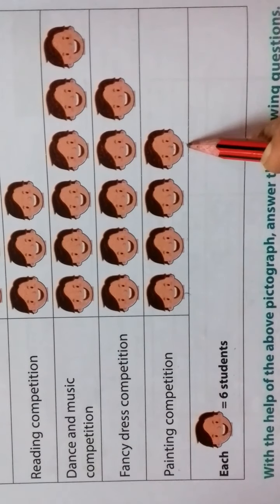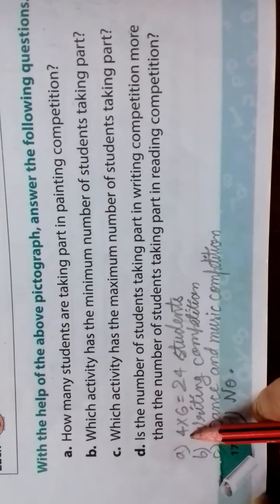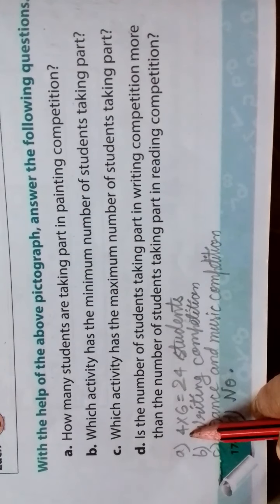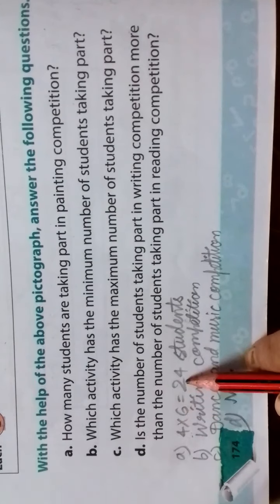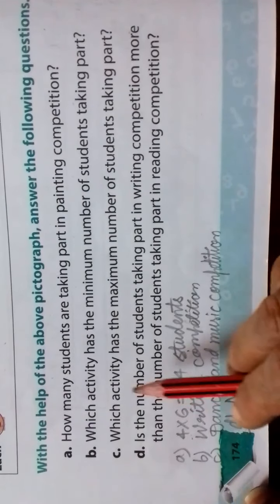Okay, one is this method. This is more time. The other method is: How many children participated? 4. And 1 student is equal to 6. So 4 multiplied by 6, so 24 students are coming. Then next question.